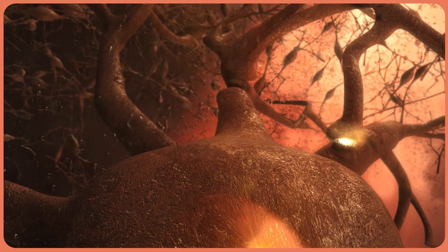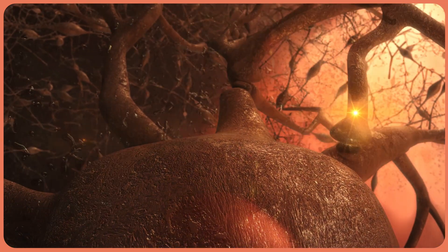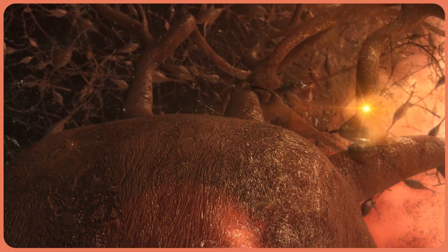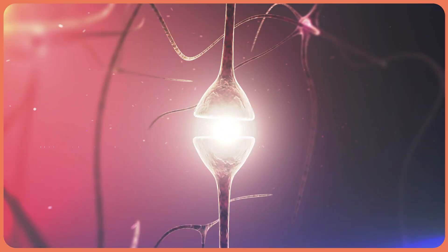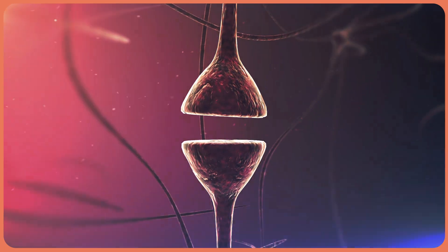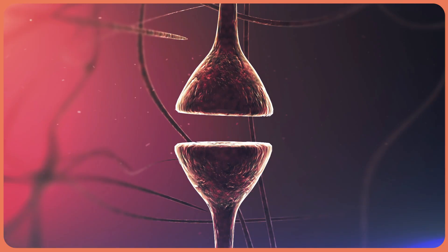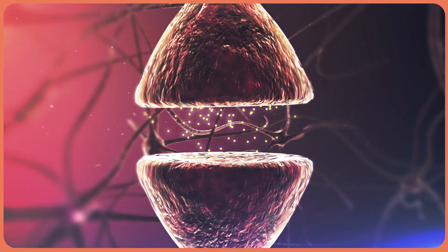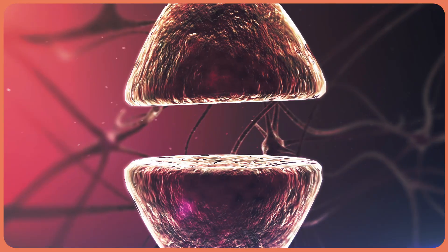When nerves talk to each other, it's called neurotransmission. They do this by releasing chemical messengers called neurotransmitters across the spaces between cells, which are called synapses. The chemicals are released from the axons and are picked up by specific molecules called receptors in the dendrites. There are different receptors all over the body that send messages to your brain when they're exposed to stimuli.